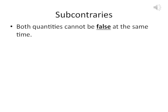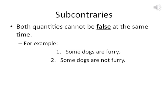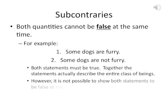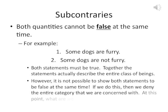For example, 'some dogs are furry' and 'some dogs are not furry' — in this case, both statements must be true, because together both statements actually describe the entire class of beings. However, it's not possible to show both statements to be false at the same time, because if we do this, then we deny the entire category altogether. At that point, what are we really talking about?